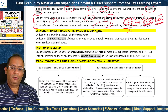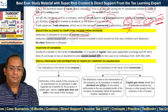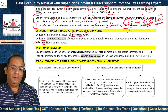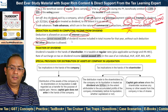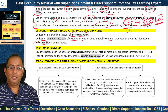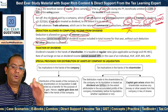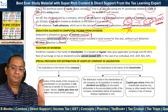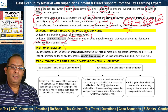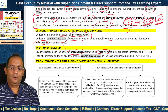The deduction allowed in computing dividend income is only on account of interest expense — no other deduction is allowed. Even on this count there is a limit: we determine the amount of dividend income included in total income for that year without such deduction of interest expense, compute 20% of that amount, and that is the maximum limit for interest deduction. Dividend income is taxable in the hands of the shareholder, not in the hands of the company, and dividend is taxable at regular rates.